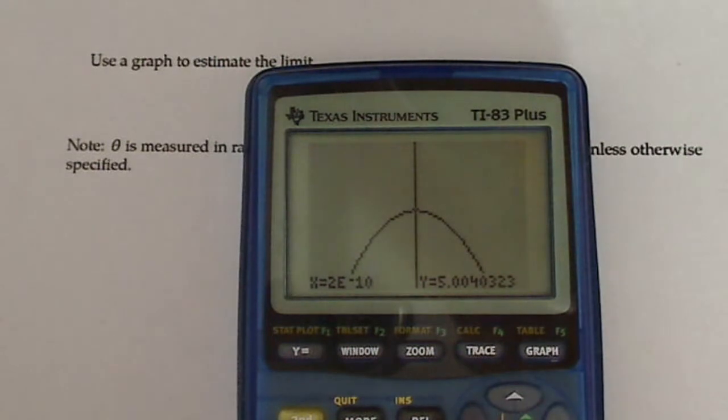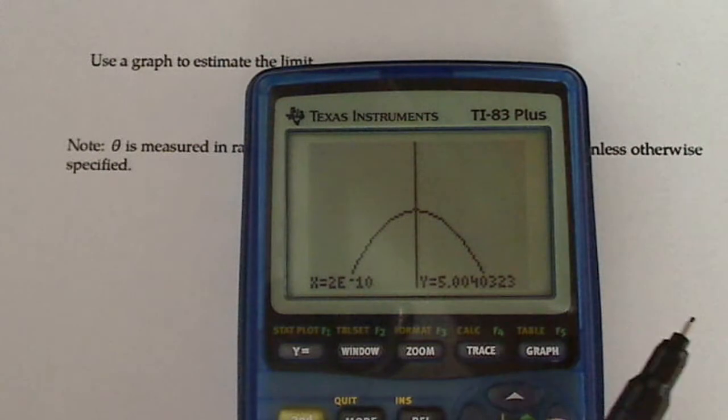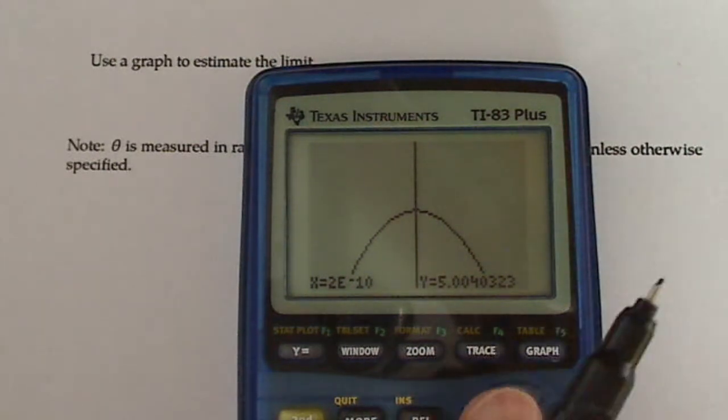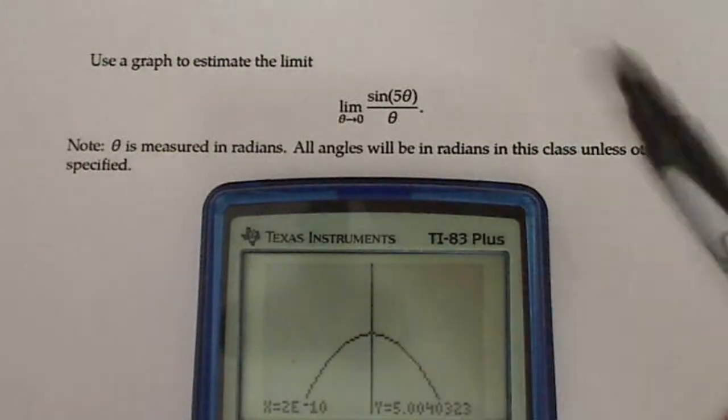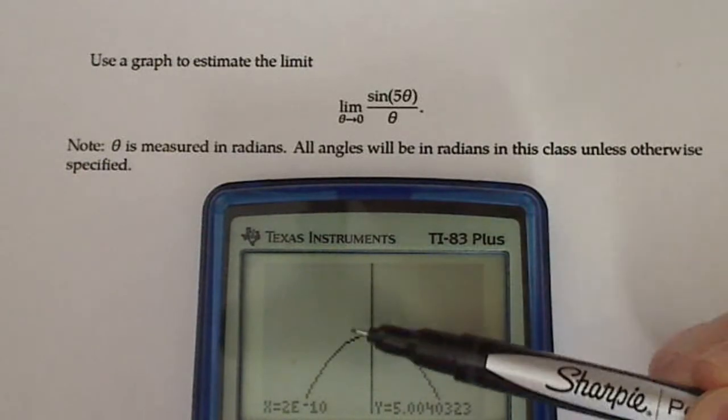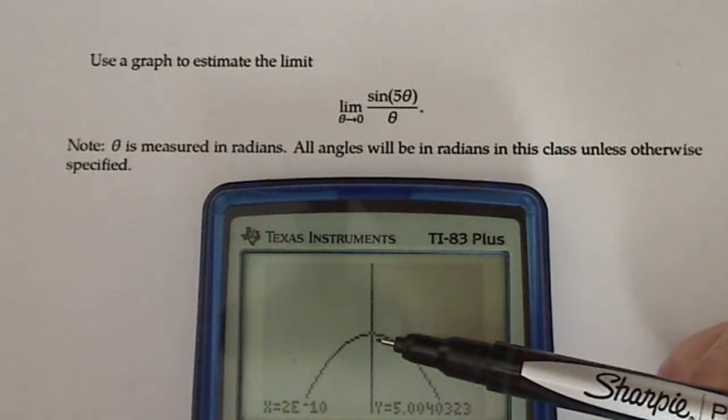Now notice since the graphing calculator is just a glorified light bright, not always will you see the hole where there's supposed to be a hole. So even though this is a very sophisticated piece of machinery, it still doesn't have everything that we want. We have to also know that this is undefined here. So there should be a hole right there.